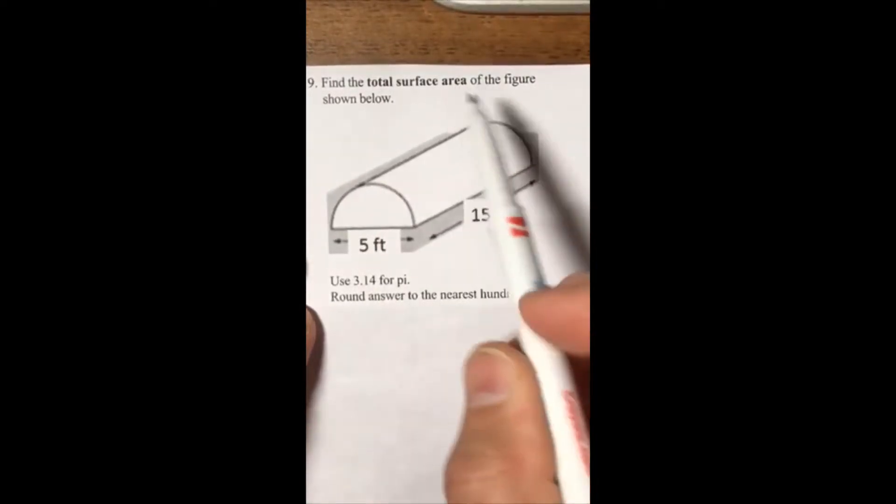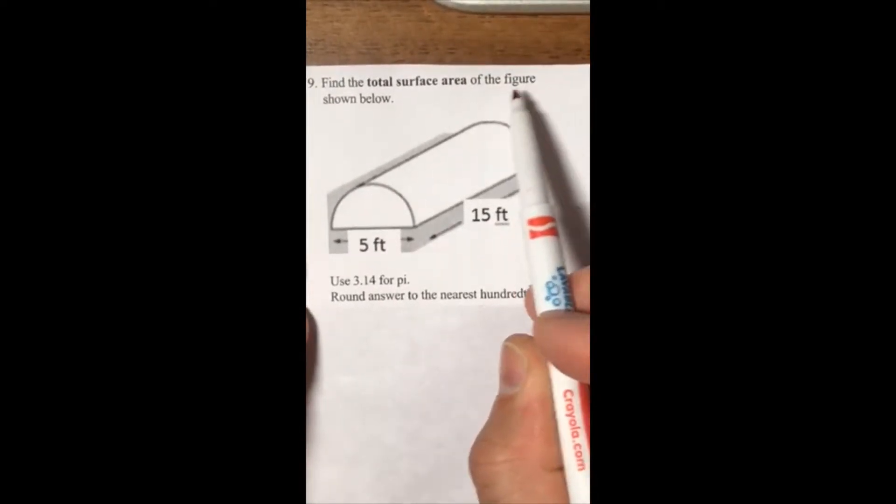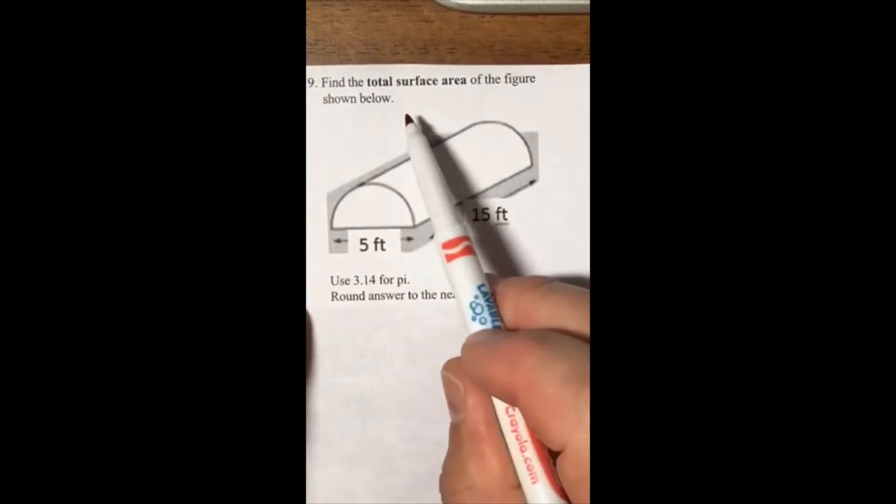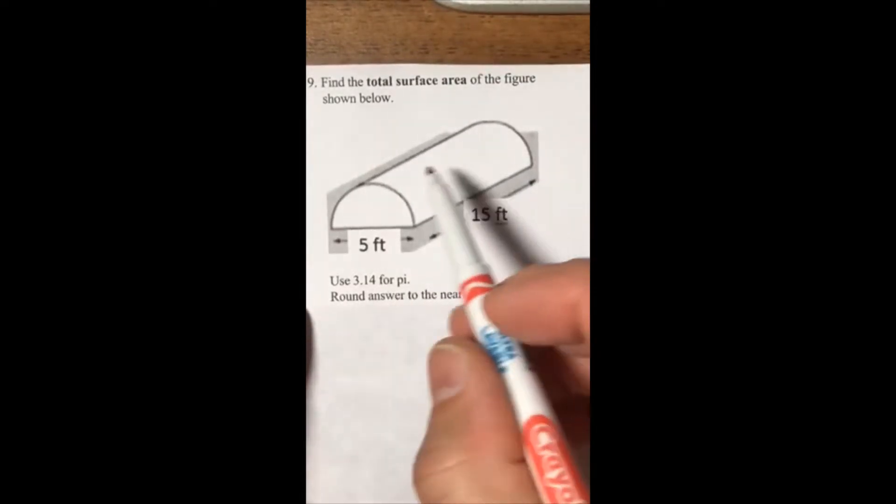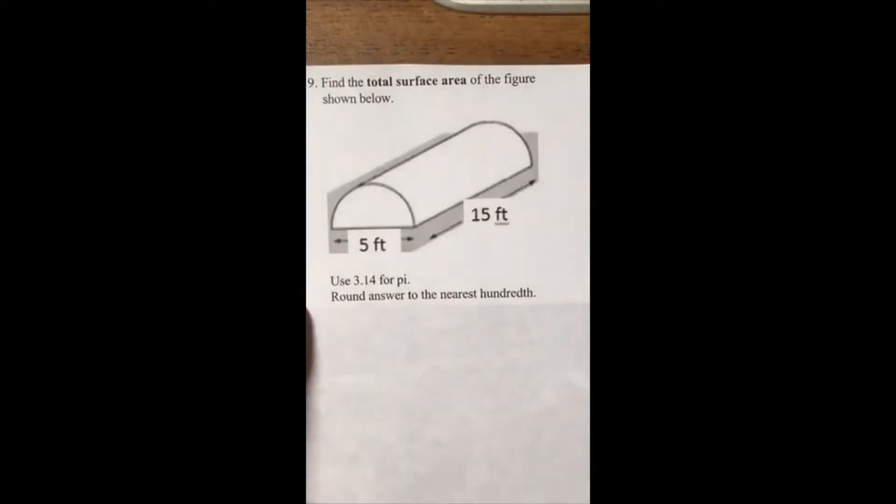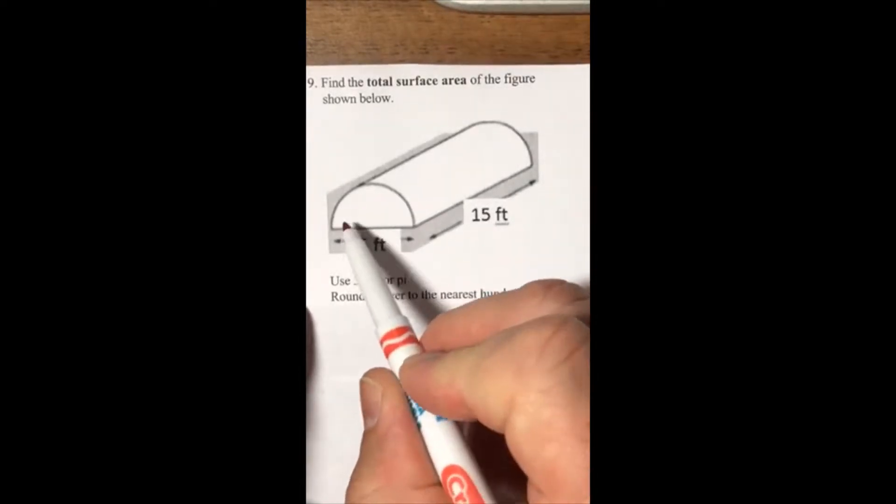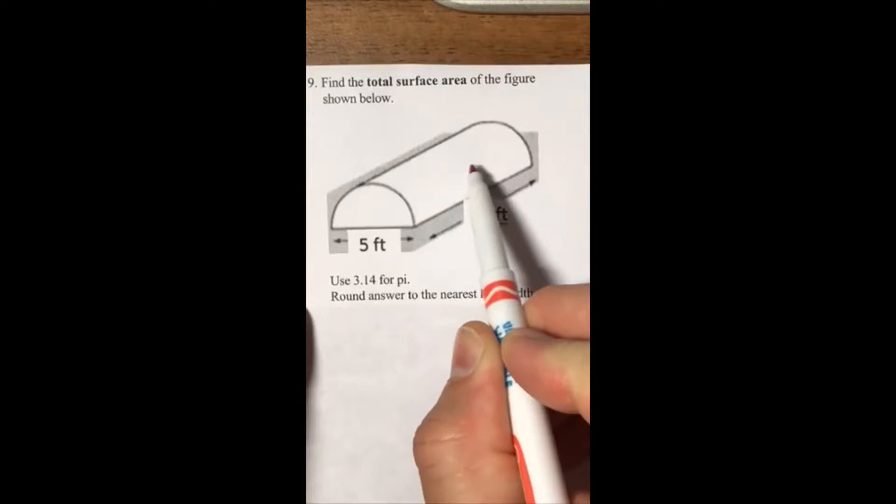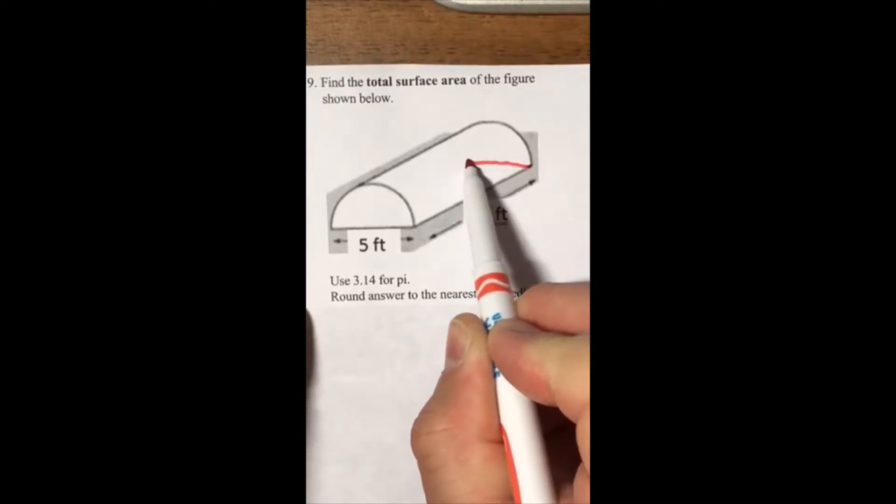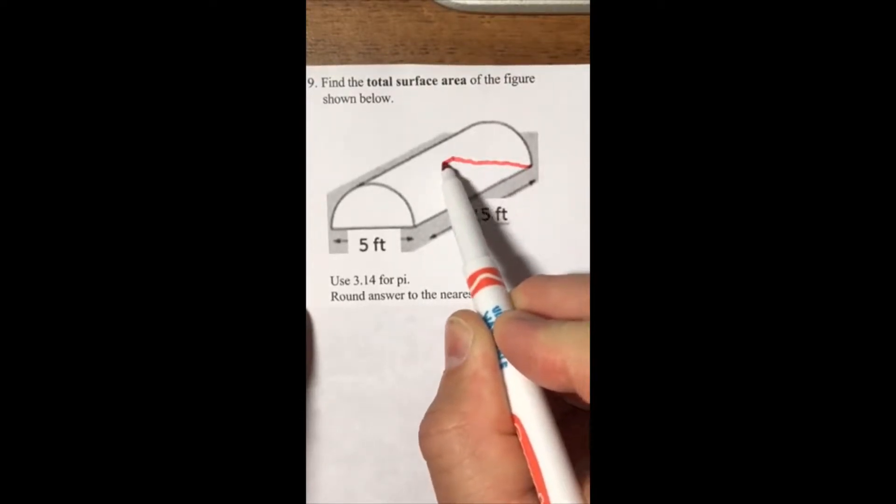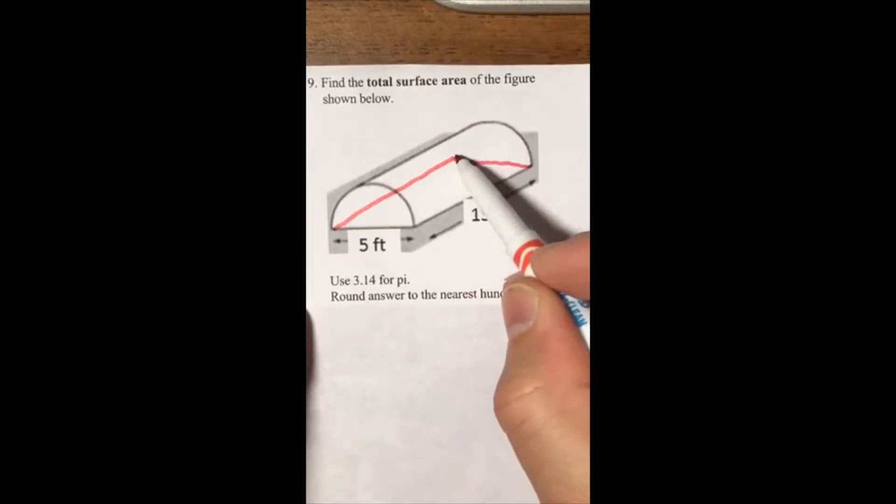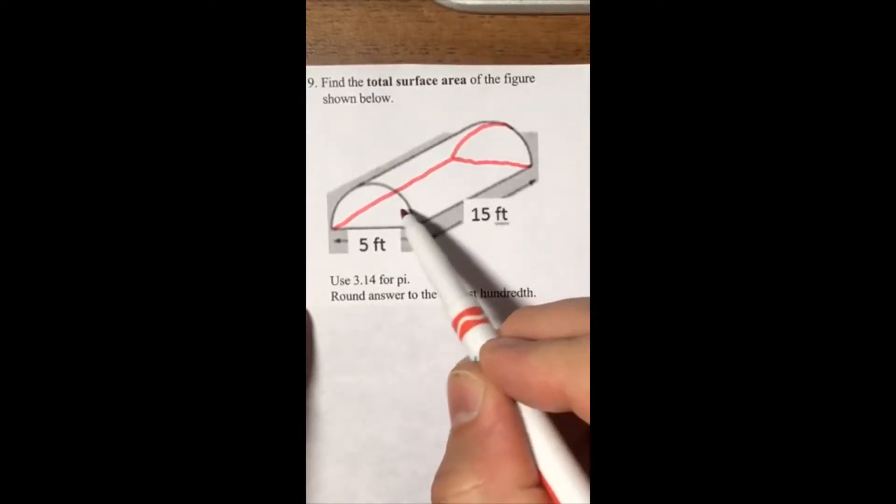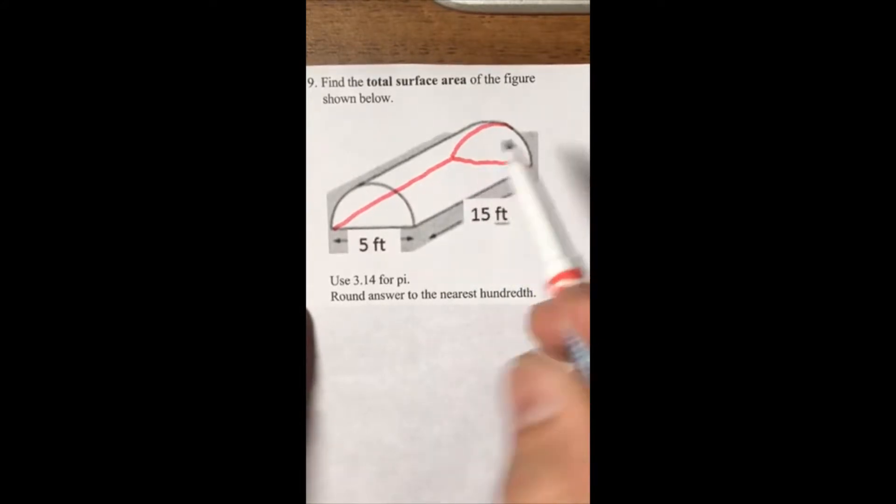We want to find the total surface area of the figure shown below. Now, there should be an exclusion here. We do not want to include this rectangular piece, okay? We don't include that rectangular piece.